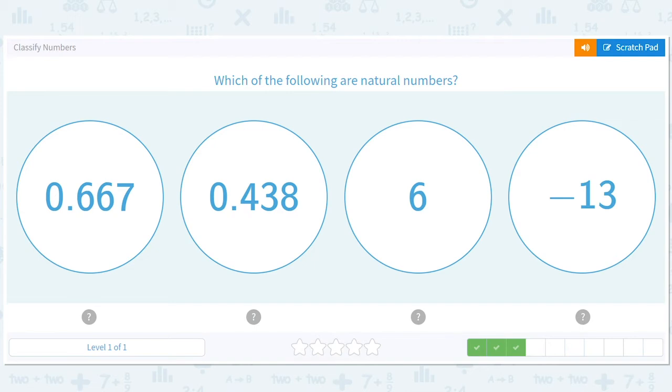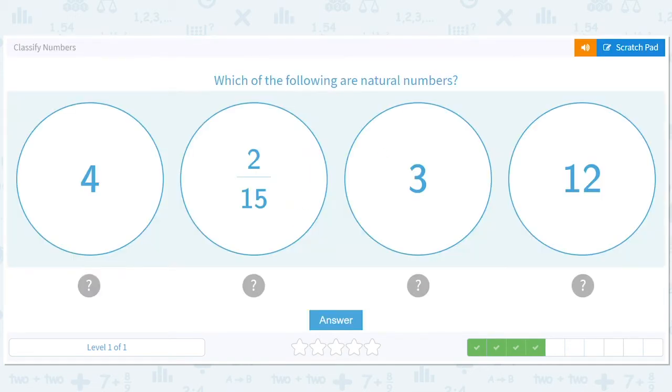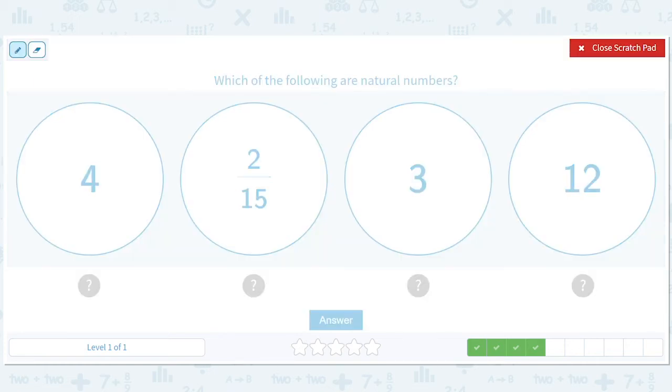Negative 13 is not a natural number, but it is an integer. But that's not what the question is asking. Which of the following are natural numbers? So now we have multiple choices. I hope it lets us do multiple. Yeah, okay.